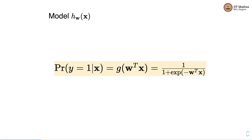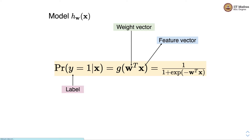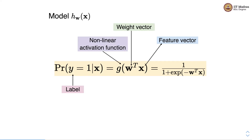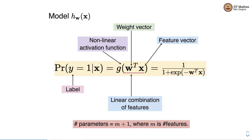Here, y is the label, x is the feature vector, w is the weight vector, g is a non-linear activation function, and w transpose x is called the linear combination of features. The number of parameters is m plus 1, where m is the number of features and we add an additional parameter for a bias. There are two steps: first we perform the linear combination of features, followed by application of a non-linear activation function, which is the sigmoid function in case of logistic regression.